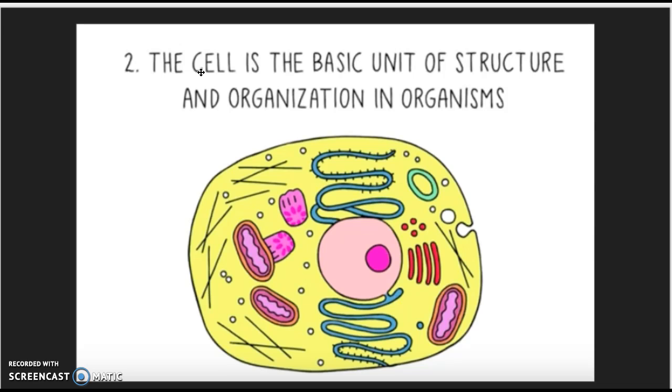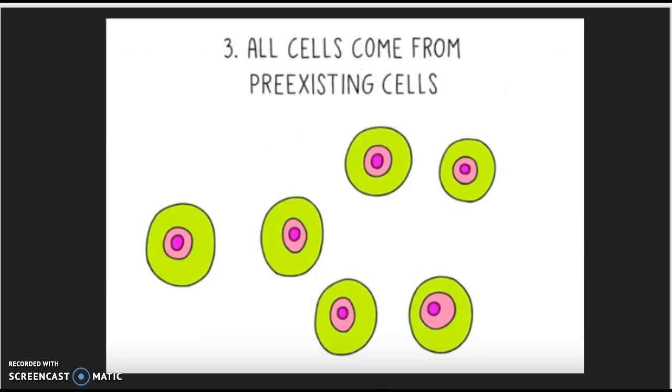The third part of the cell theory is that all cells come from pre-existing cells. If we look at the picture here, all of these cells in cell division are going to split up into two separate cells. Cells do not spontaneously occur; they don't come out of thin air. All cells come from pre-existing cells.